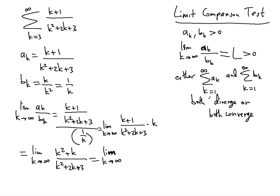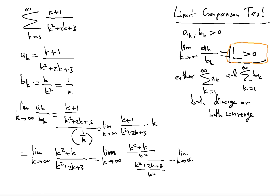So first we have to find the limit value to make sure we get a positive limit value. We're going to divide both the numerator and denominator by k squared, the highest power. So k² + 2k + 3 divided by k² gives us 1 + 1/k divided by 1 + 2/k + 3/k². Now we can plug in infinity: 1 + 0 over 1 + 0 + 0, which equals 1.